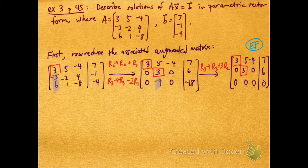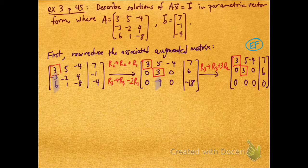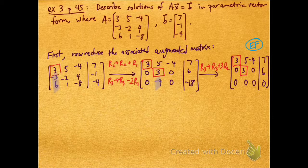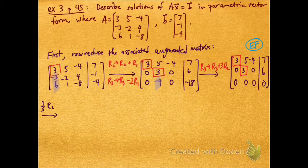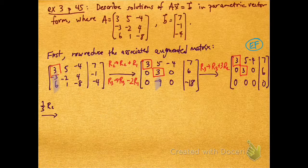The fact that the rightmost column is not a pivot column tells me, using the existence and uniqueness theorem, that this linear system has a solution. I'm going to continue row reducing to put it into reduced echelon form, so that I can better see what the solution is.